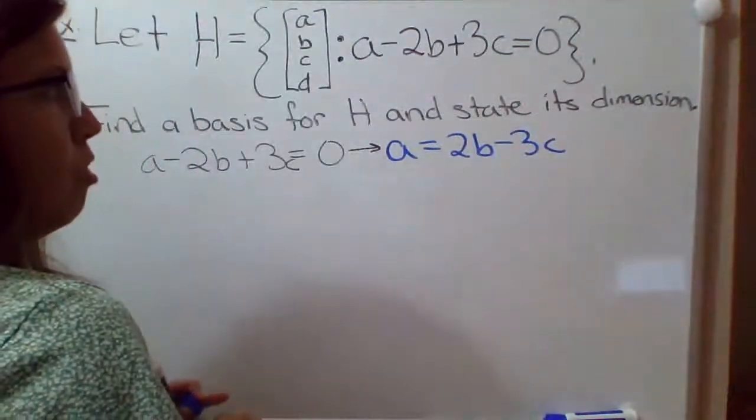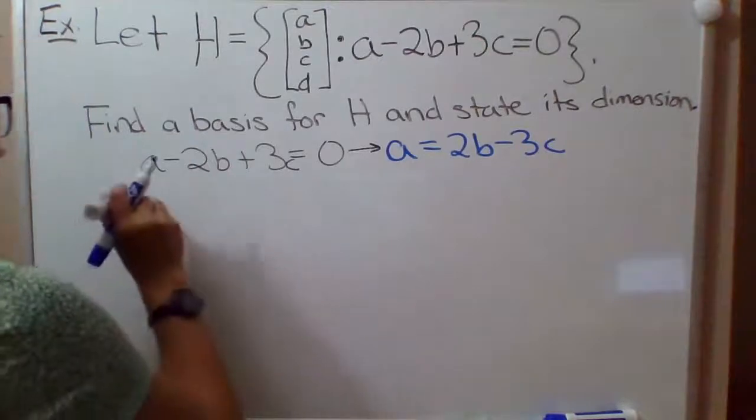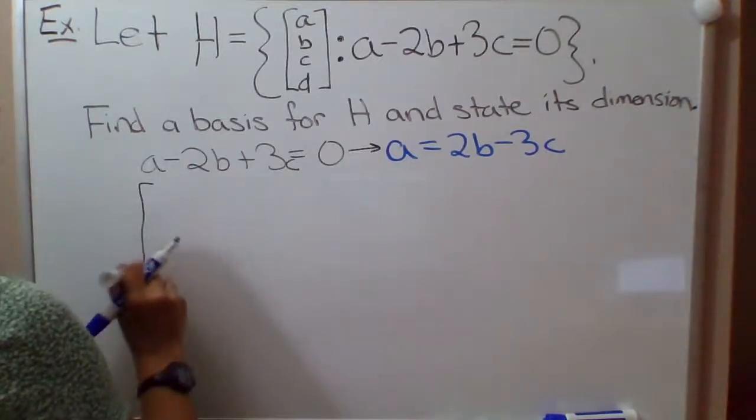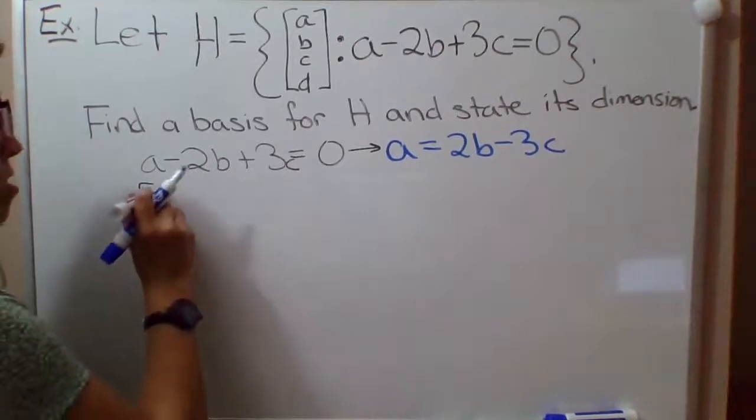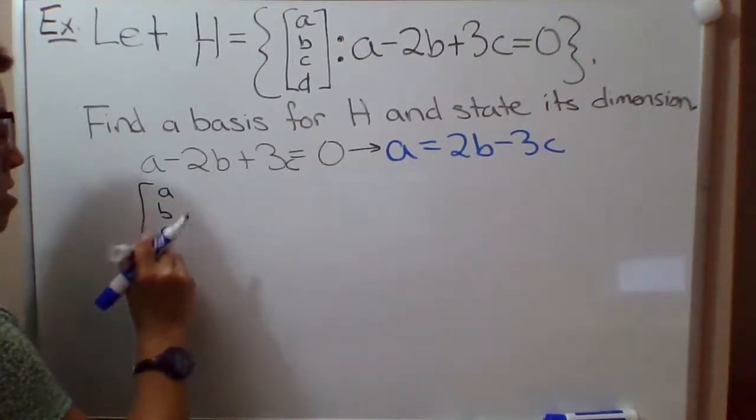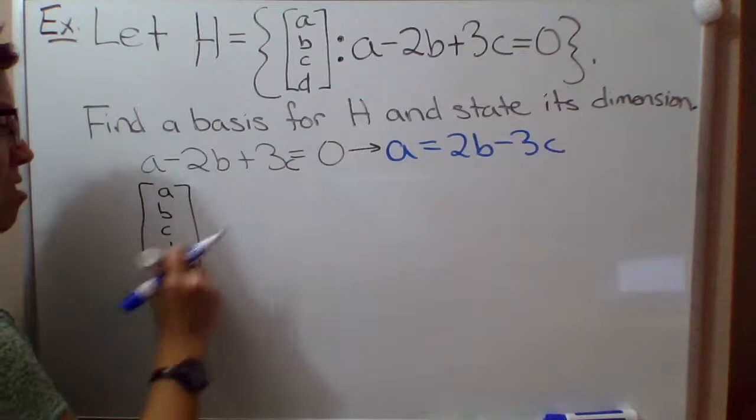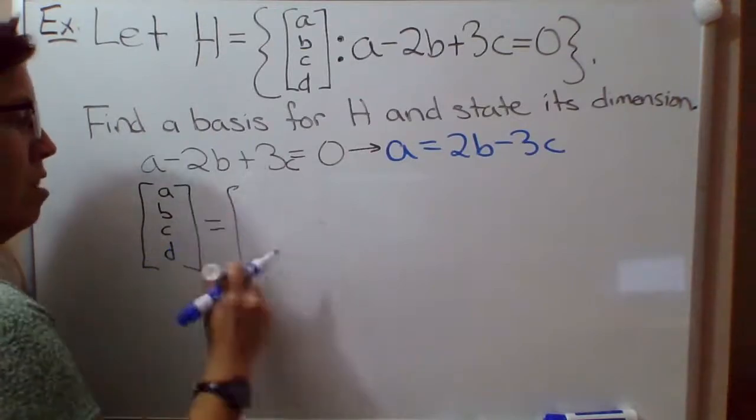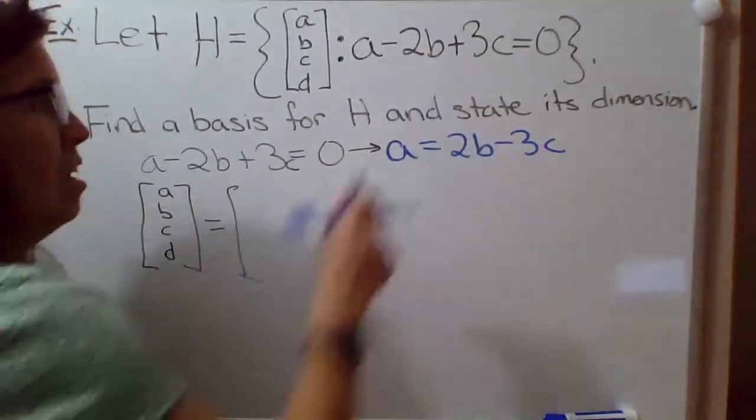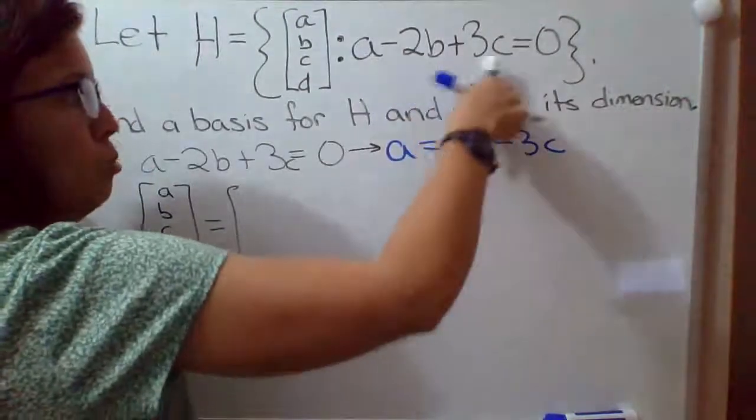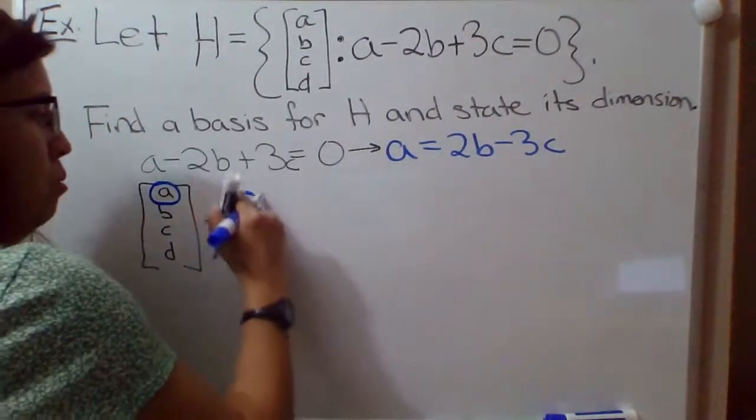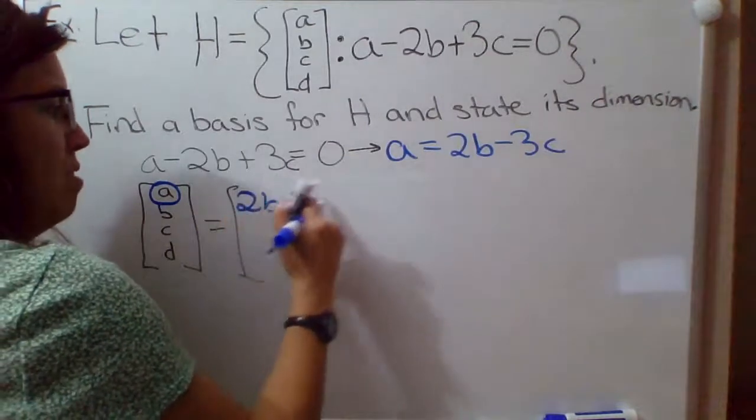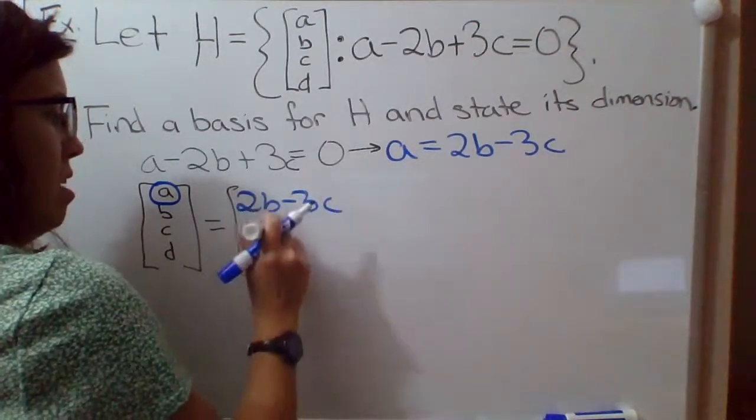So that means that any vector in this subspace H, so ABCD, if it's going to satisfy this condition here, then A will have to equal 2B minus 3C. So I'm going to replace the A here with 2B minus 3C, and then BCD.